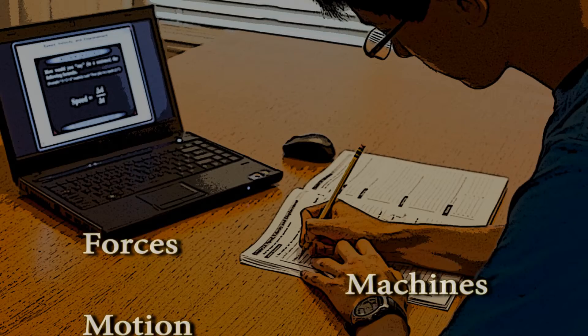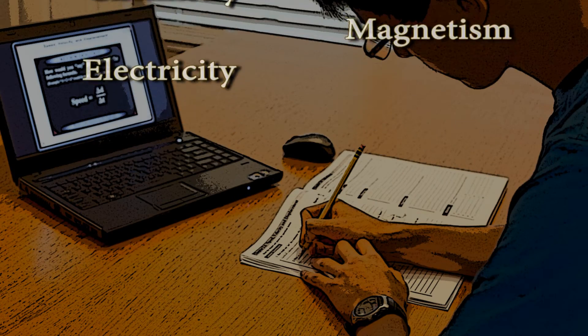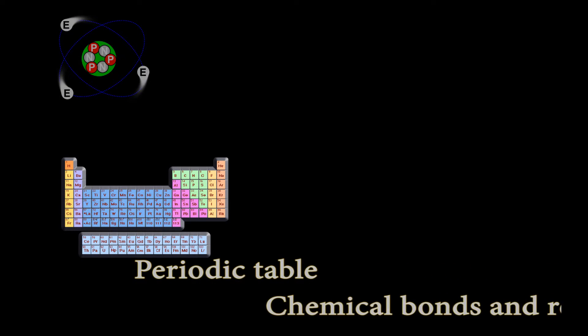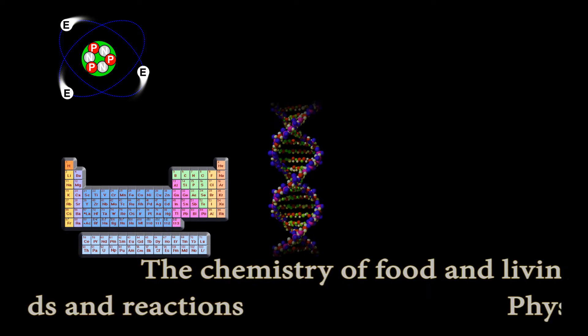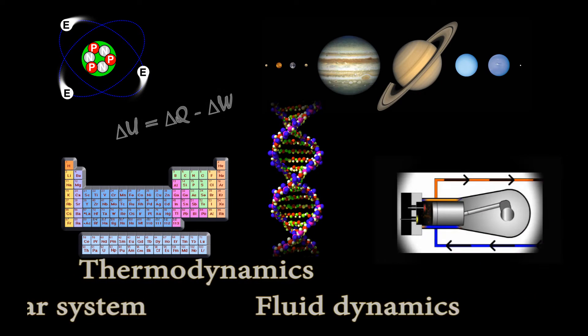The course covers forces, machines, motion, energy, sound, light, chemistry, magnetism, and electricity. Students also explore the periodic table, chemical bonds and reactions, the chemistry of food and living systems, the physics of the earth and solar system, thermodynamics, and fluid dynamics.